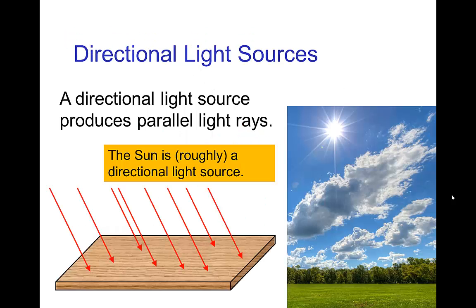Now let's talk about one of the simplest types of light sources, which would be a directional light source. With a directional light source, all of the light rays are parallel — they reach an object or surface all traveling parallel to each other. The sun is roughly a directional light source; it's not exactly a directional light source, but it's a simple approximation to one. In computer graphics, you can set up a directional light source. Here's a simple scene with a cube sitting on a floor, and you see that the different faces have a different brightness — the brightness is uniform across each face, but each face has a different brightness depending on the angle between the face and the light source.